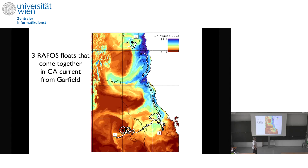This happened because a whole bunch of things lined up at the same time: one trajectory is driven by the California Current while these two are more driven by eddy flow, and it just so happened the trajectories ended up at the same place.